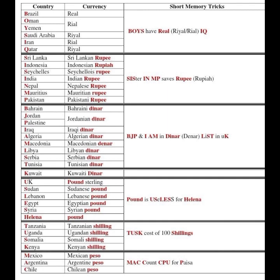Next are the Dinar countries: Bahrain, Jordan, Palestine, Iraq, Algeria, Macedonia, Libya, Serbia, and Tunisia. The mnemonic is 'BJP I am in Dinar list in Kashmir' — BJP being the Indian party. Instead of UK you can replace it with Kashmir so you won't get confused. All of these countries deal in Dinar.